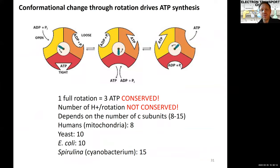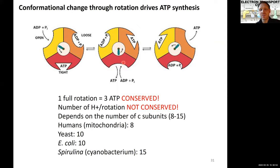In cartoon form: the three beta subunits in yellow, orange, and red represent their current states — open, loose binding substrate, and tight with catalysis. With each partial rotation of the shaft, the open subunit can now bind substrate, the loose one becomes tight and performs catalysis, and the tight one empties and opens. Each subunit makes one ATP per full rotation, so one full rotation produces three ATPs total — one per subunit. This is completely conserved across all known ATP synthases.